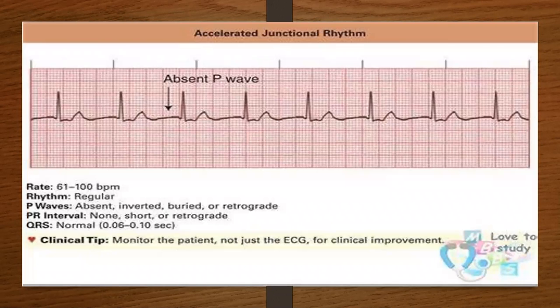Then you have your accelerated junctional rhythm with a rate of 61 to 100 beats per minute. With your accelerated junctional rhythm, your P waves can be absent, inverted, buried, or retrograde.